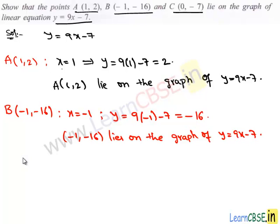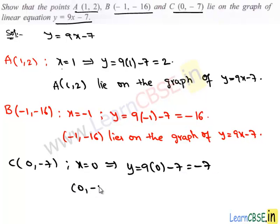Similarly, we have the third point, which is (0, -7). Let's take its x coordinate, that is 0, and substitute it in the equation y = 9x - 7. Here we have y = 9 times 0 minus 7, which equals -7. Therefore, (0, -7) lies on the graph of y = 9x - 7.